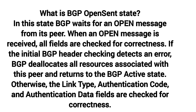What is the BGP Open Sent state? In this state, BGP waits for an Open message from its peer. When an Open message is received, all fields are checked for correctness. If the initial BGP header checking detects an error, BGP deallocates all resources associated with this peer and returns to the BGP Active state. Otherwise, the link type, authentication code, and authentication data fields are checked for correctness.